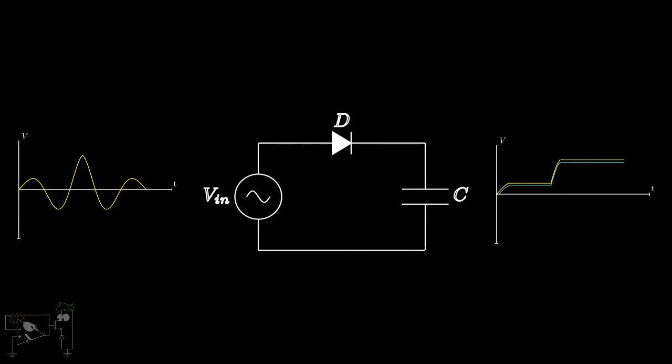For accurately measuring the peak value, we have to use the super diode, that is, an op-amp. This is how the circuit looks when we replace the diode with a super diode.